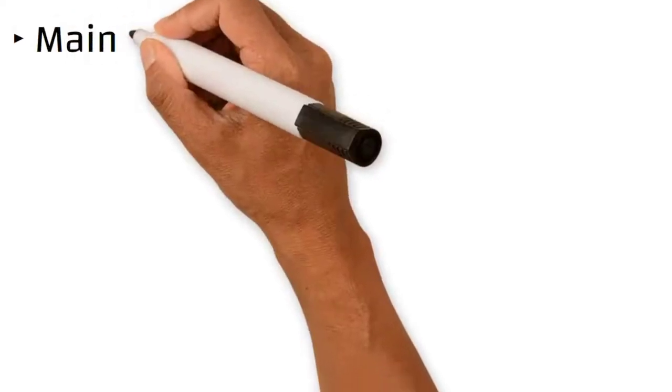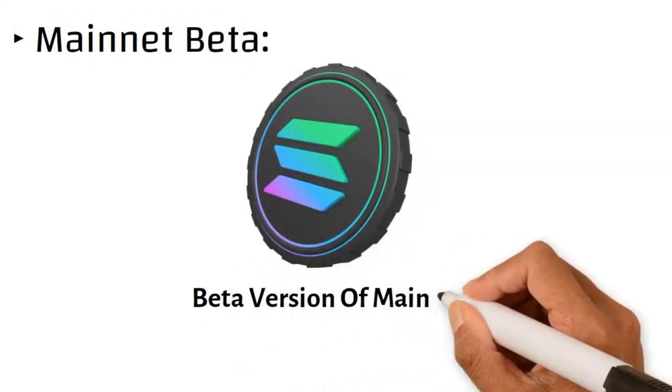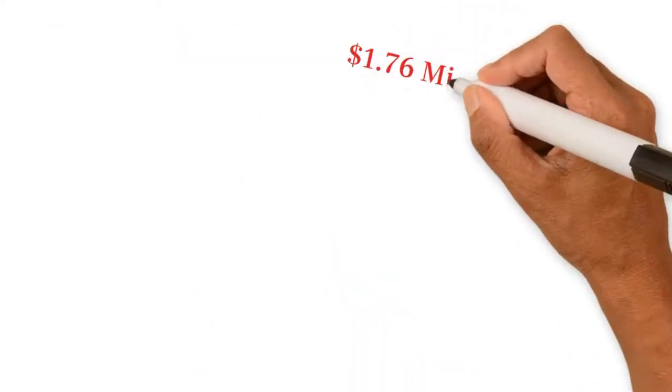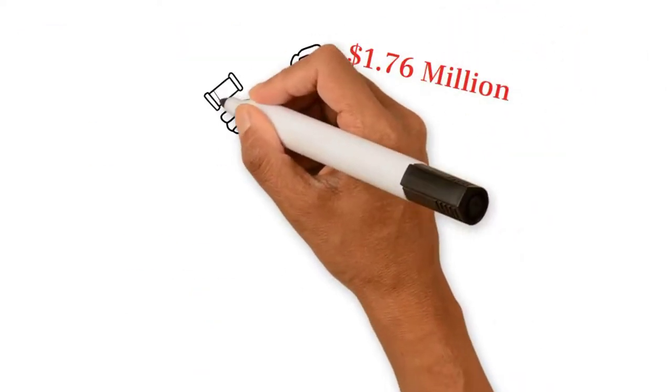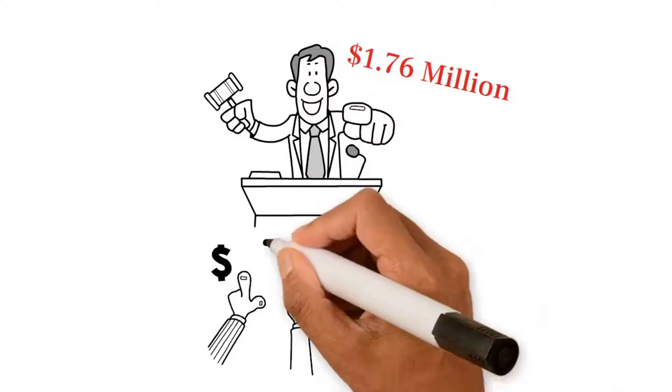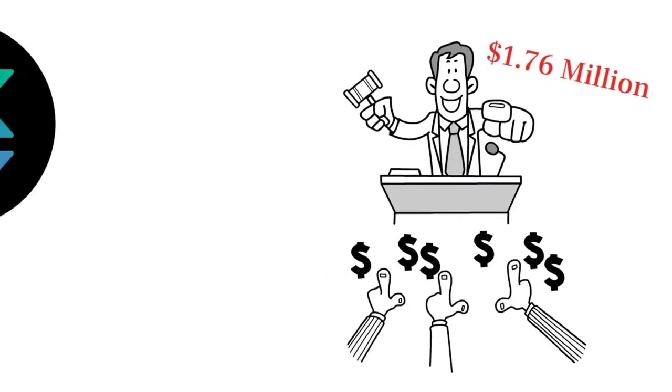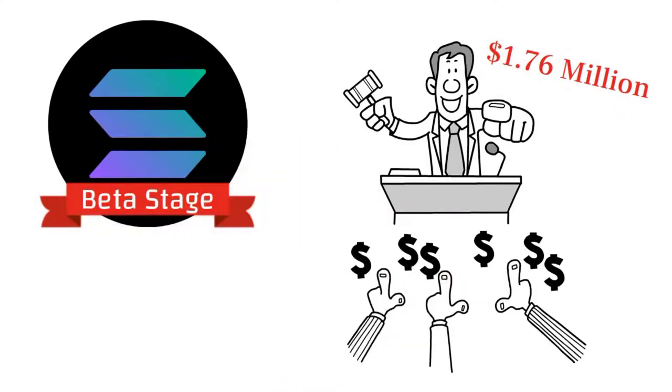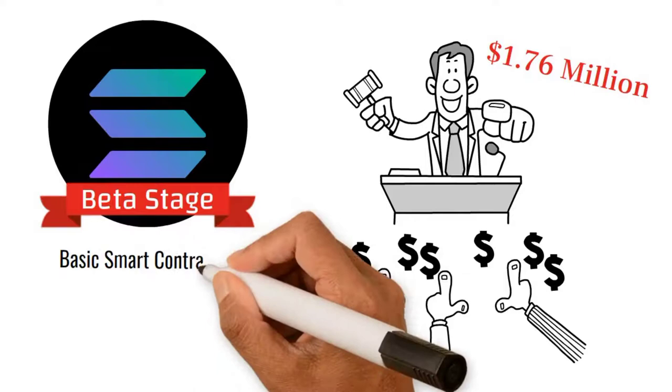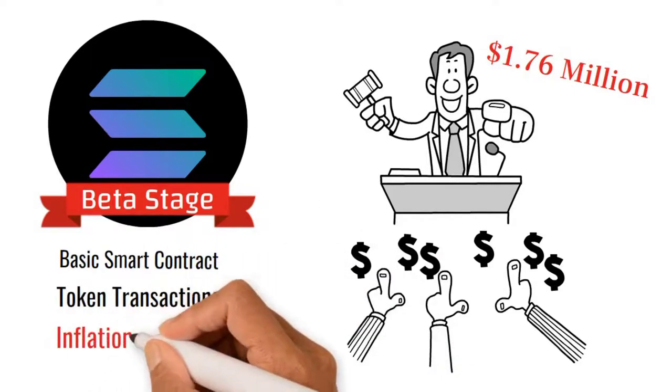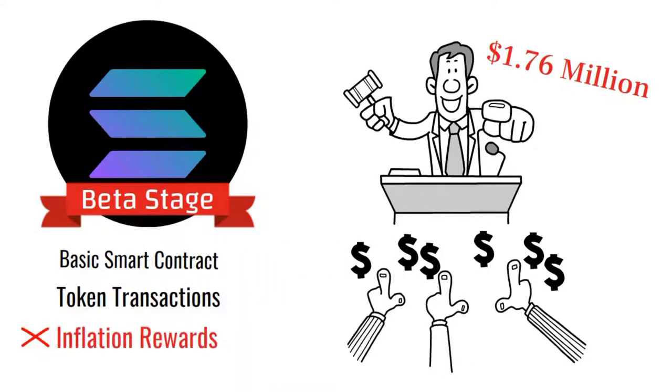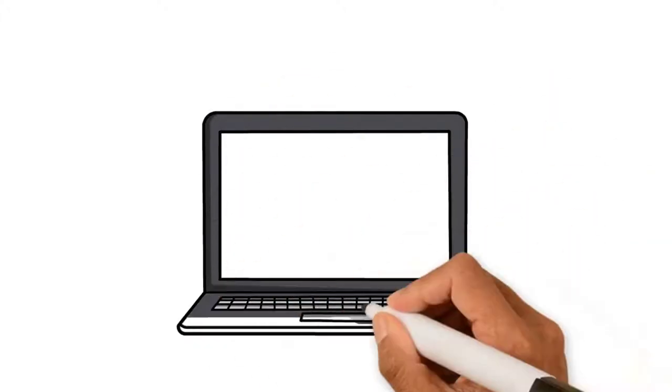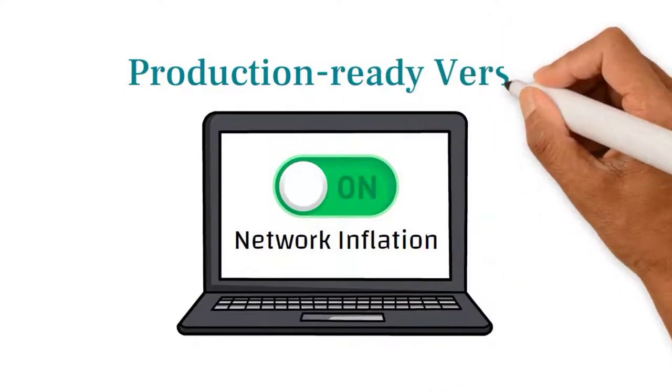Mainnet Beta. Solana released a beta version of its Mainnet in March 2020, which was around the same time the project raised $1.76 million in a public token auction. The project intended to operate its Mainnet in a beta stage. This beta version supports basic smart contract capabilities and token transactions, but it does not feature inflation rewards for validators. Once network inflation turns on, the network will graduate from a beta stage to a production-ready version.